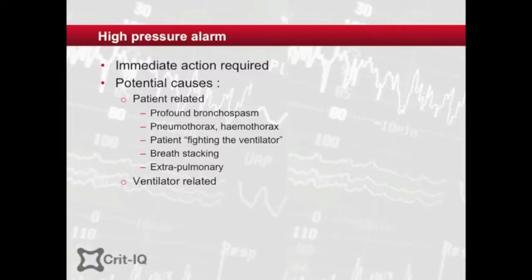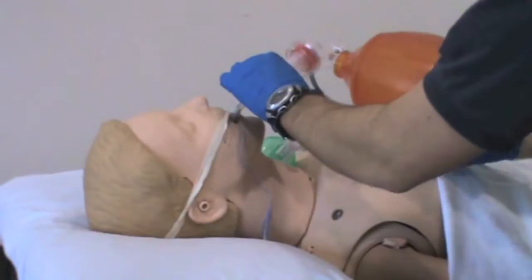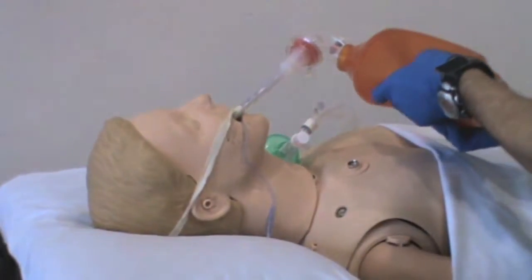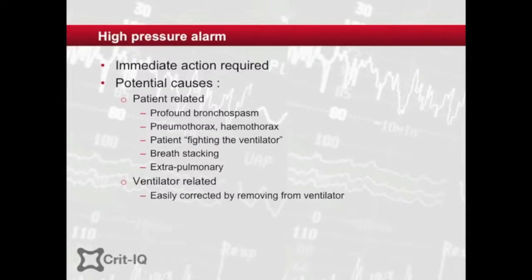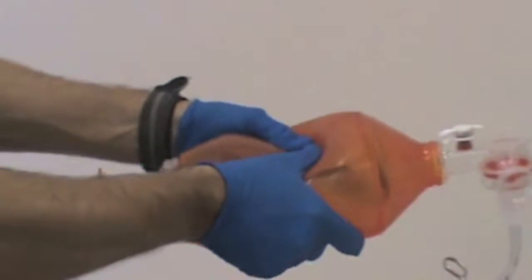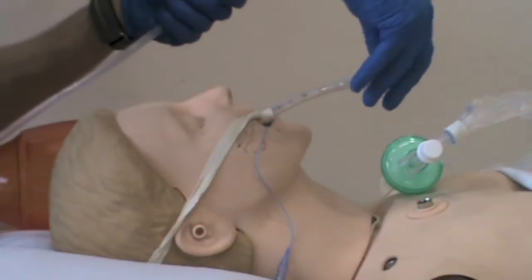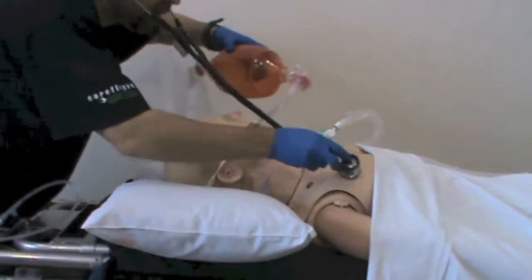The ventilator and circuit can occasionally contribute, but these causes are easily detected by removing the patient from the ventilator and hand ventilating. Patient-related causes result in great difficulty squeezing the bag. These causes lend themselves to a systematic approach, starting at the tip of the tube and working down. Immediately passing a suction catheter and auscultating the chest can rapidly discern the cause.